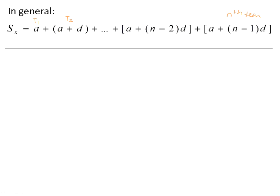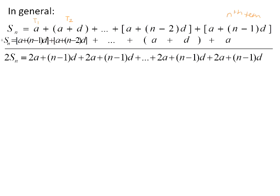If we now do the same pattern and we write the sequence in reverse, A will be now matched up with A plus N minus 1D, etc. We can now add the two equations together. Sn plus Sn is twice Sn. A plus A is 2A plus N minus 1D. If we just check the second column, A plus D plus A plus N minus 2D.